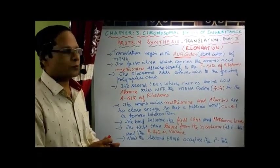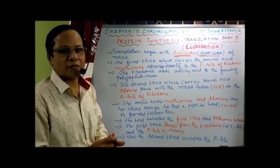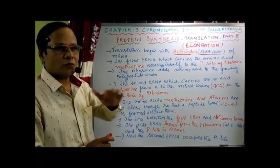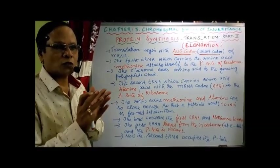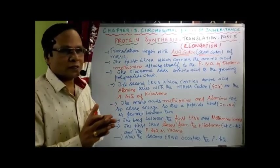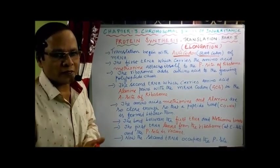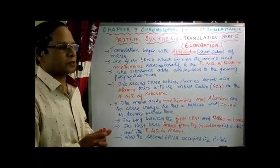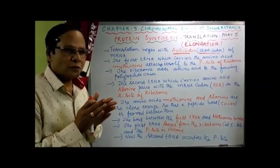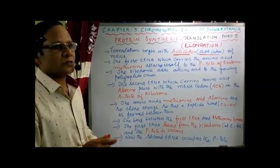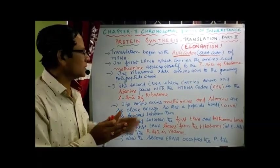So the first tRNA which carries amino acid methionine attaches itself to the P-site of the ribosome — the peptidyl transferase site. We have the P-site and A-site both present in the largest subunit. We also have the E-site for the exit of acylated or non-acylated uncharged tRNA. The ribosome catalyzes the addition of amino acids one by one to the growing polypeptide chain, playing both structural and catalytic roles.